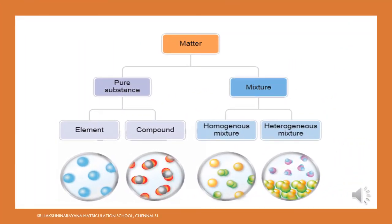Matter is classified into two types: pure substance and mixture. Pure substance is further classified into two: element and compound.